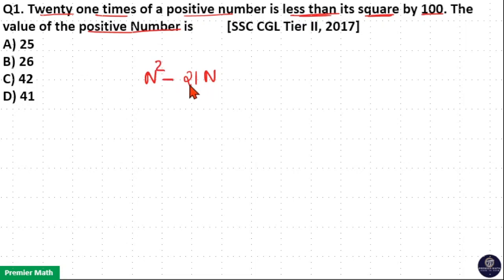That means N² - 21N by 100. N² - 21N is equal to 100, which means N² - 21N - 100 is equal to 0.